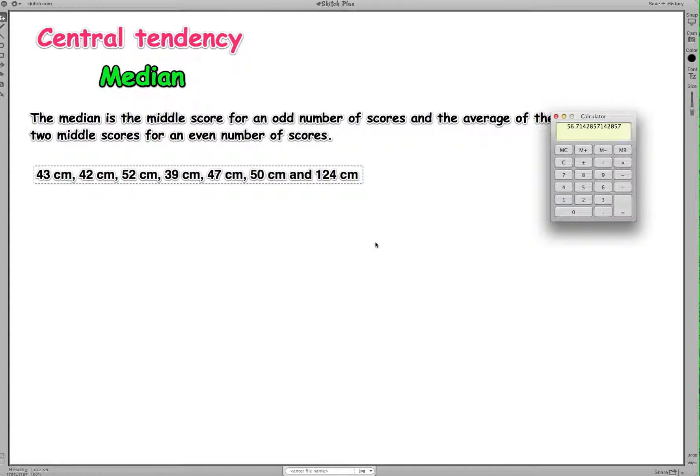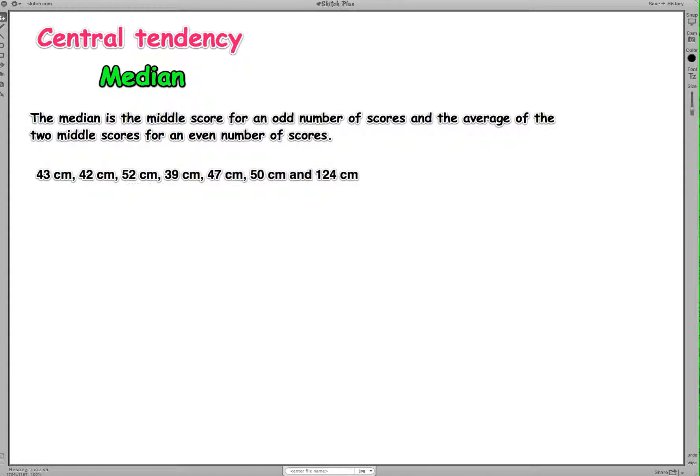So in this case, to get a number that more accurately represents the average size of the fish from our fishing trip, we could use the median. So the median, what we've got to do when we calculate median is, the first thing we need to do is organize our scores so that our lowest score is first and then our highest score is last. So let's do that here.